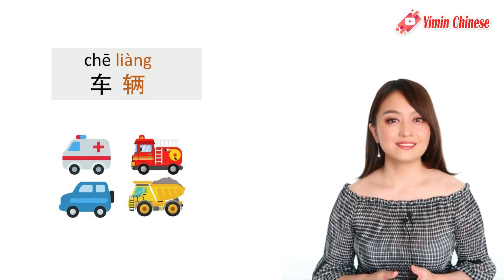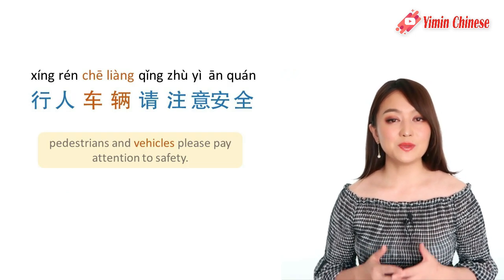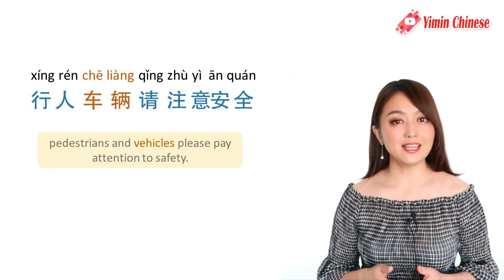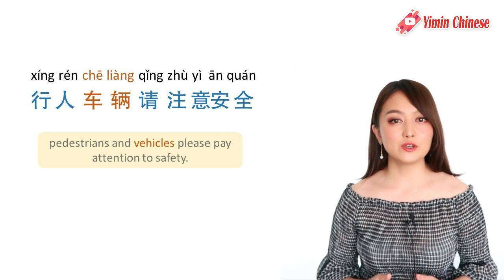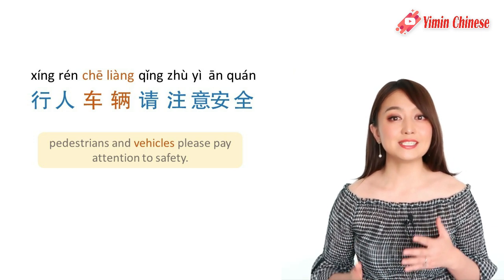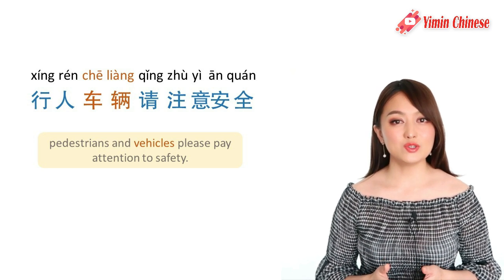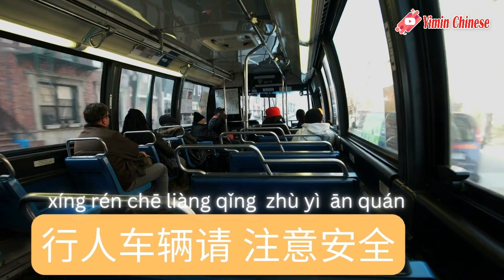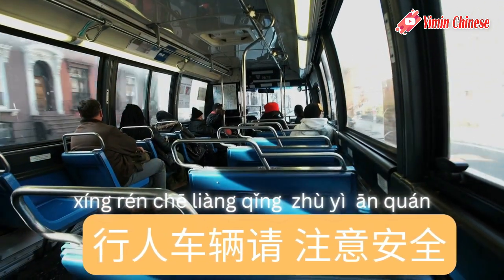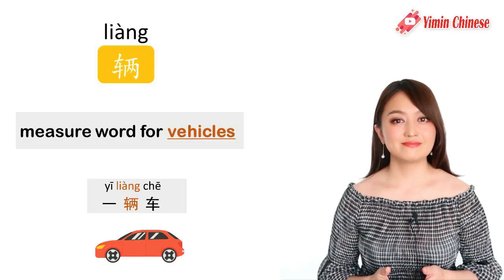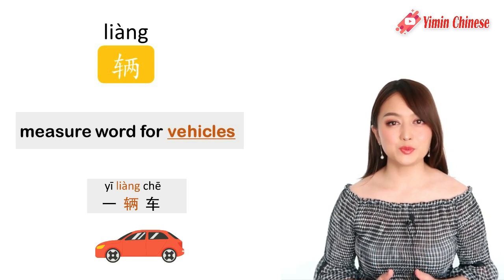If you live in China, on many buses you'll hear the loudspeaker say: 行人车辆，请注意安全 — 'Pedestrians and vehicles, please pay attention to safety.' That's why 辆 is chosen as the measure word for vehicles.